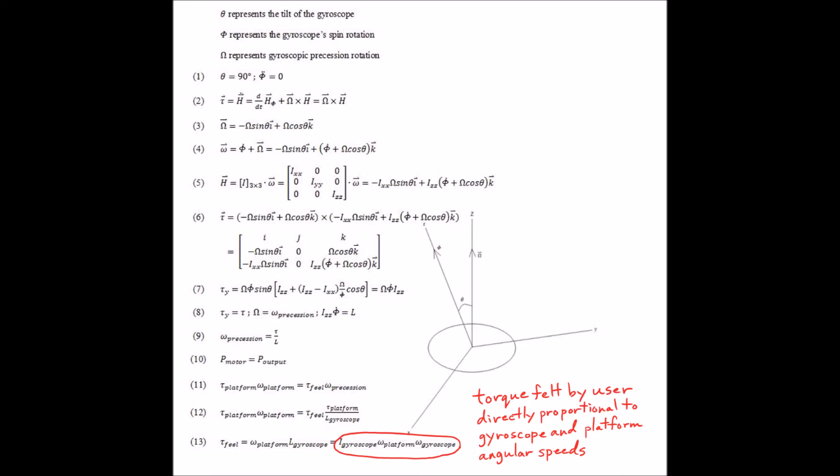Using an Eulerian frame of reference for rotation, I was able to find out that the torque felt by the user is directly proportional to the angular speed of the platform and the gyroscopes.